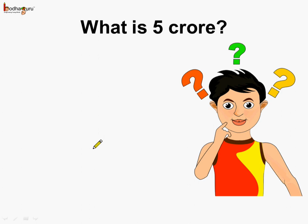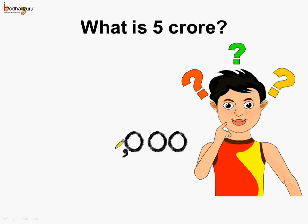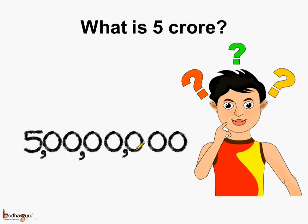Now, how do we write 5 crores? Let's start from the units period, followed by thousands, lakhs, and then crore. We put 3 zeros for the units period and a comma. Then comes the thousands period — 2 digit places — and a comma. Then the lakhs period with 2 zeros and a comma. Now we have reached crore, and we need 5 crores, so we put 5 here. That gives us the number 5 crores.